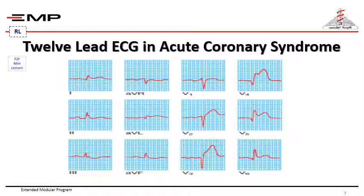The ECG changes are best seen in the leads that face the ischemic or infarcted area. With anteroseptal infarction, abnormalities are found in one or more leads from V1 to V4, while anterolateral infarction produces changes from V4 to V6 along with changes in AVL and lead 1.